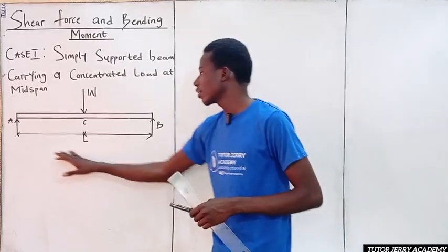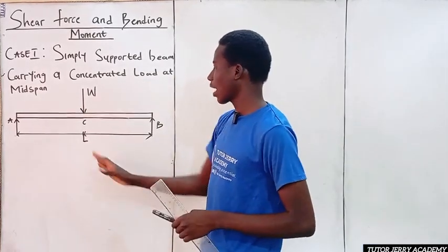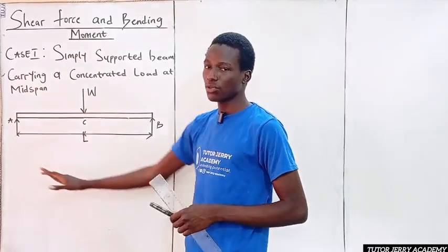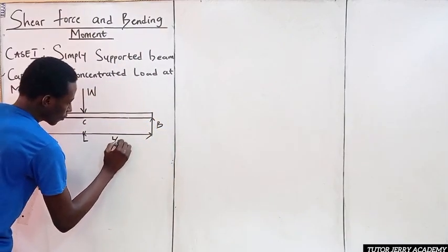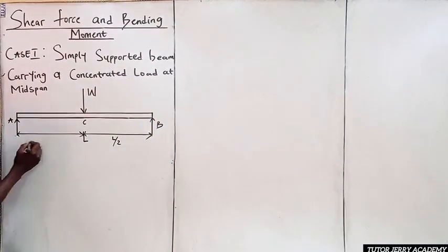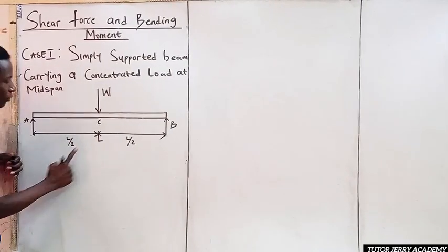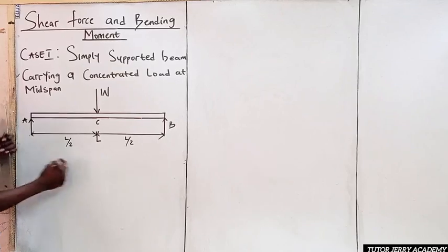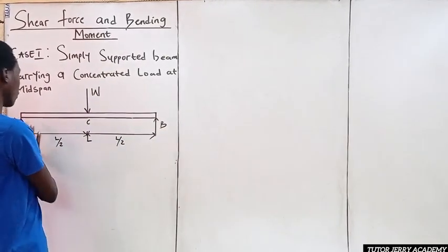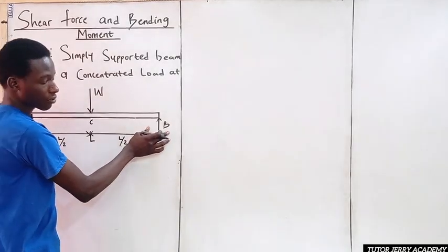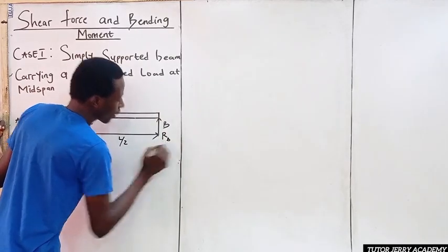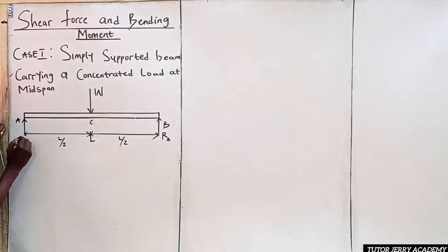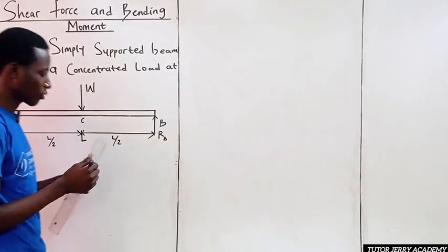The length of this beam is L, which implies that half of it will be L over 2 and L over 2. So here I have L over 2 from this point to this point, and similarly L over 2 from here to here. We have a support at this point and a support at this point, so there will be a reaction RB here and a reaction RA here.